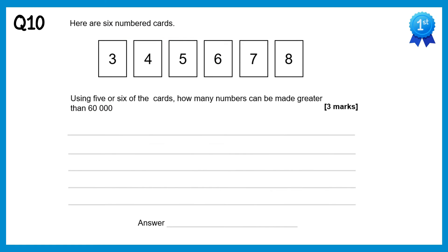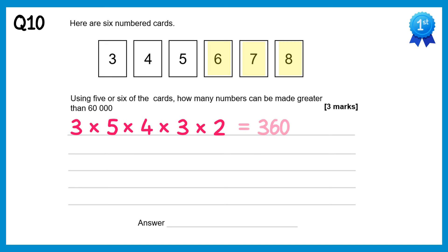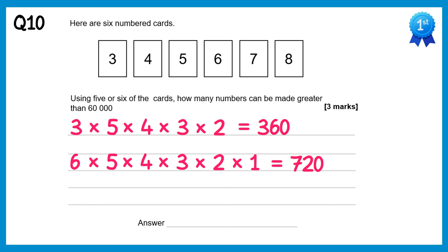For this question, we're after numbers that are greater than 60,000, but we're told we're allowed to use 5 or 6 of the cards. So let's look at when we use 5 of the cards first. If we use 5 of the cards and we're above 60,000, it must start with a 6, 7 or an 8, so there are 3 ways for the first digit. Once we've used one of those digits, there are 5 digits left to pick from, so times 5, times 4, times 3, and times 2, and this gives you 360. Now for 6 digit numbers — all 6 digit numbers we select must be above 60,000, so we could select any number for the first one: 6, then times 5, times 4, times 3, times 2, times 1 for the final digit, and that gets you 720. If you add 360 and 720, you get 1080.